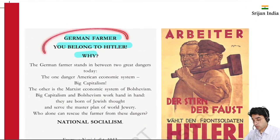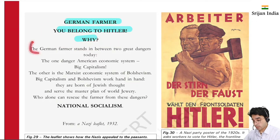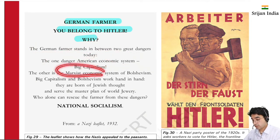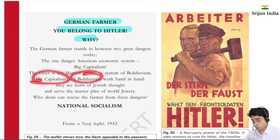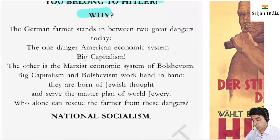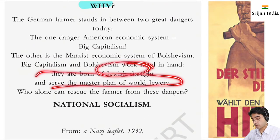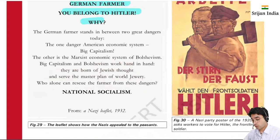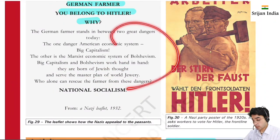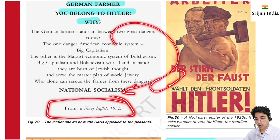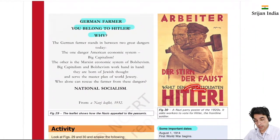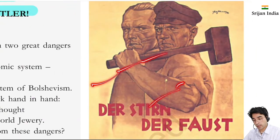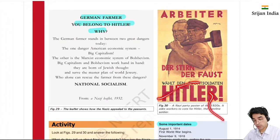Another propaganda piece read: 'German farmers, you belong to Hitler. Why? Because German farmers stand between two great dangers of today - the American economic system of big capitalism, and the Marxist economic system, Bolshevism. Big capitalism and Bolshevism work hand in hand - they are born of Jewish thought and serve the master plan of world Jewry. Who alone can rescue the farmer from these dangers? National Socialism.' This was Nazi propaganda leaflets, and in this way a forced and distorted masculinity started to be promoted.